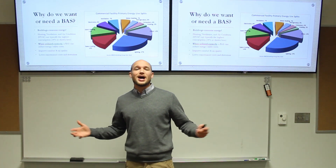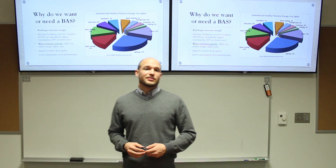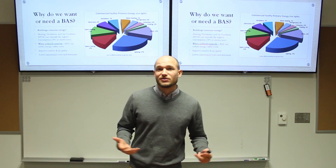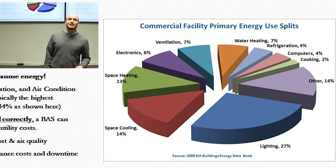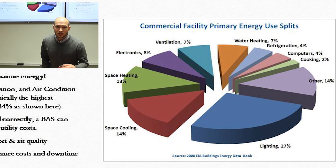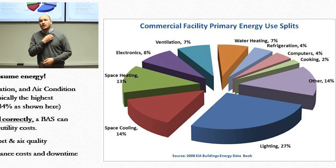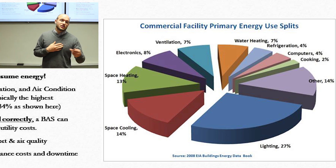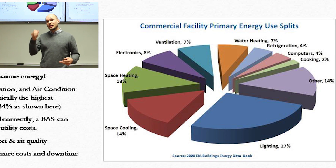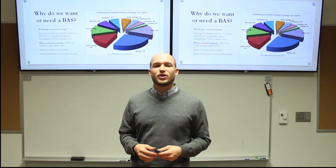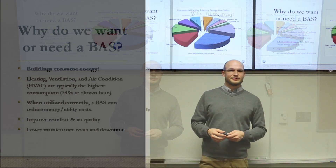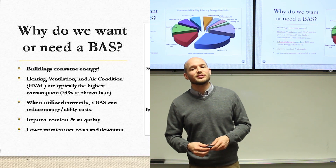First and foremost, why BAS? The easiest answer for me is energy efficiency. In this pie chart you can see that space cooling, space heating, and ventilation adds up to about 34%. The data is a little old but the theory is the same. With BAS, the main thing you're controlling is HVAC — heating, ventilation, and air conditioning.